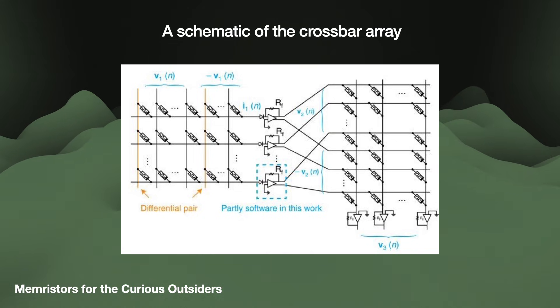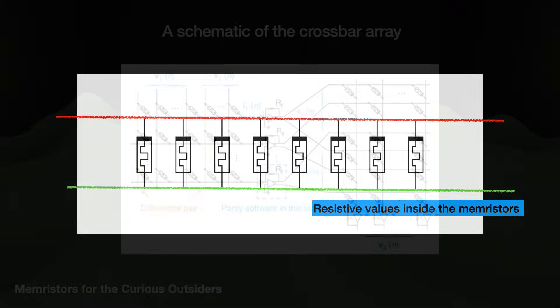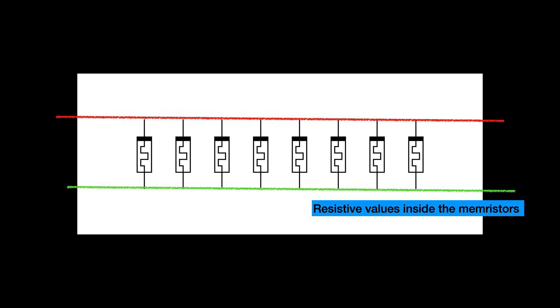Each memristor in the row has its own special resistive value, representing model parameters. If we apply voltage across the top row, then that signal interacts with each of the memristors' unique resistance values to create a current. If you recall, the voltage is like pressure and it causes water, which is like current, to flow. That current is a unique value produced by the voltage multiplied by the memristor's conductance, which is the inverse of its resistance value.